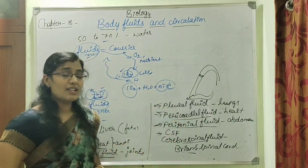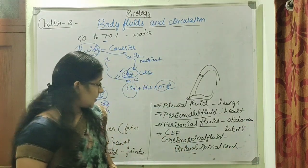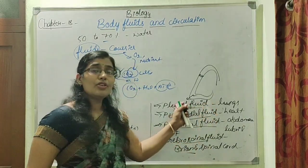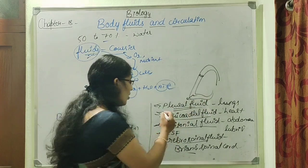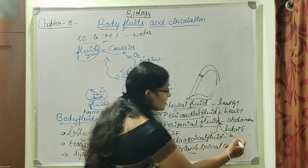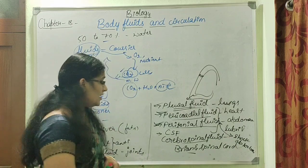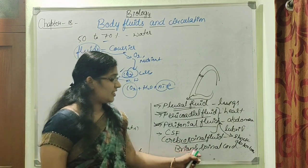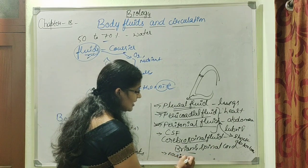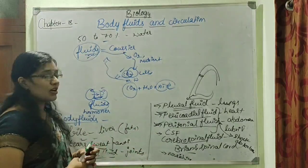All these fluids provide lubrication. In addition to lubrication, pleural fluid provides lubrication, and pericardial and peritoneal fluids act as shock absorbers. Cerebrospinal fluid, which is present in the brain and spinal cord, is nourishing in nature - it provides nourishment to the brain.